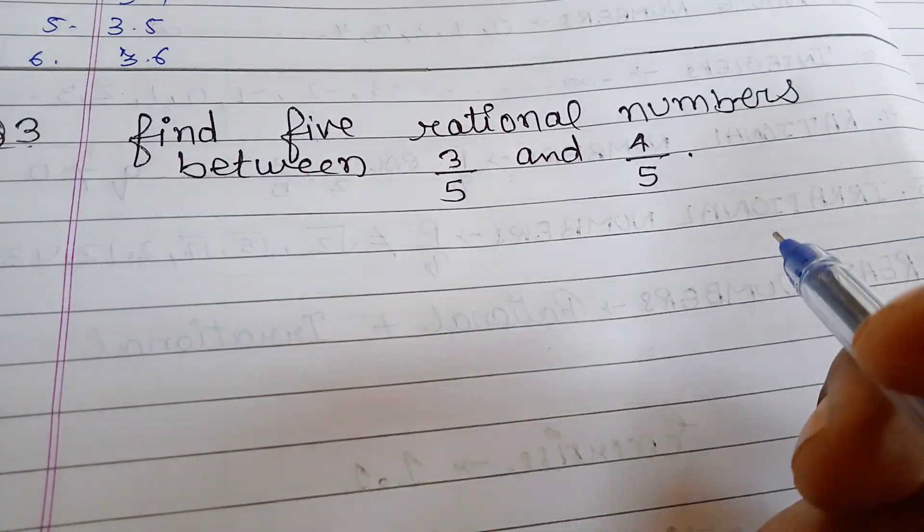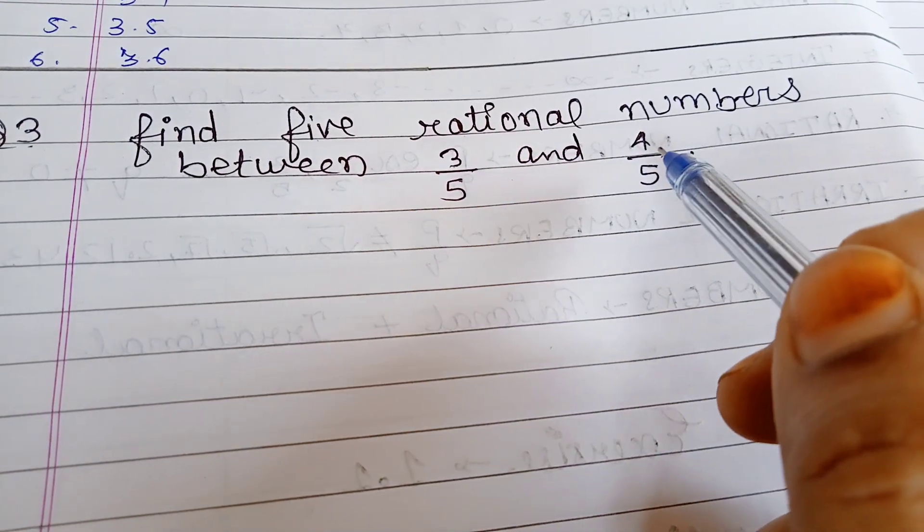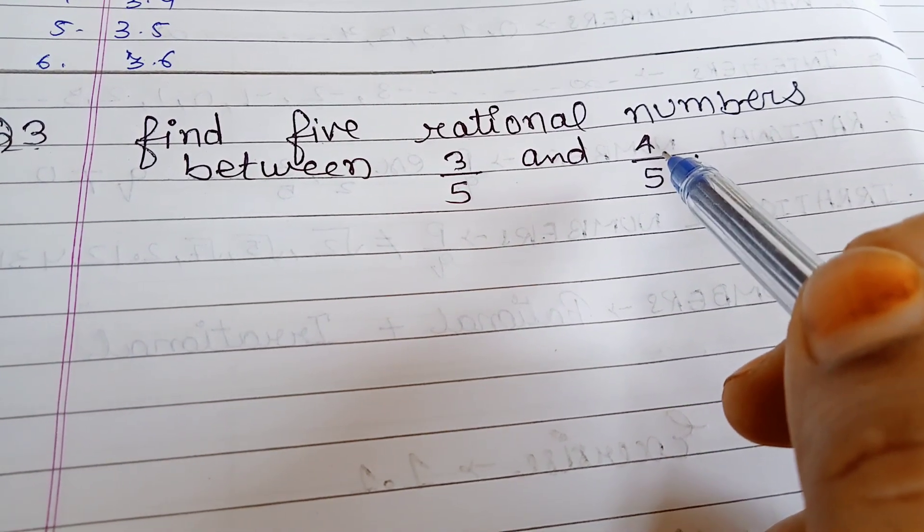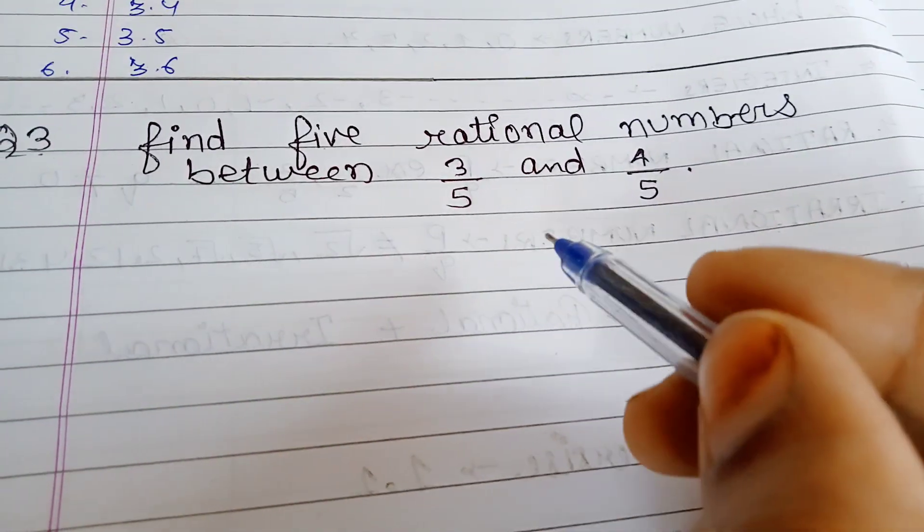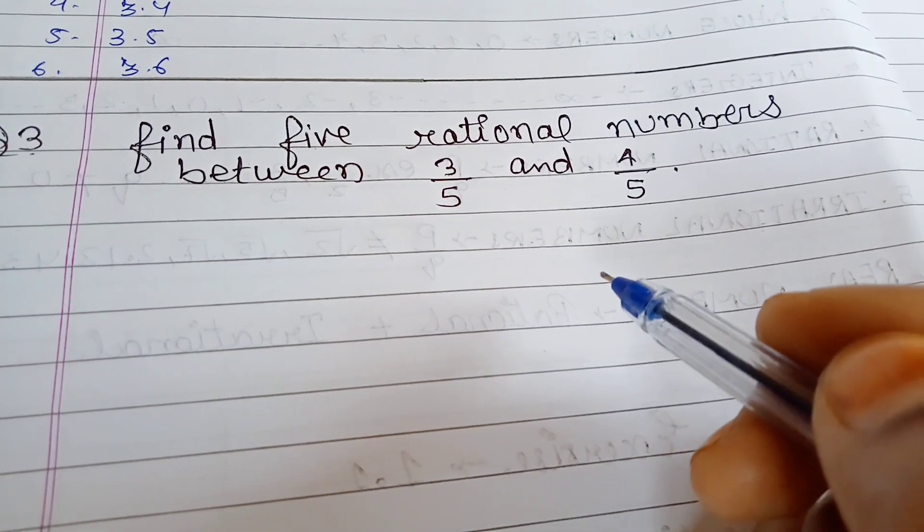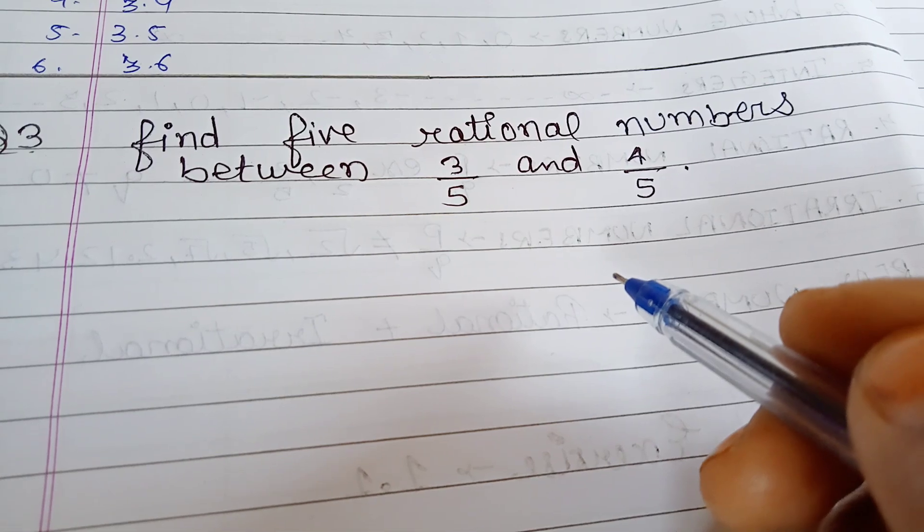As we saw in the last video, we had to find 6 rational numbers between 3 and 4, so we had to represent it on the number line. Now if we have a rational number and we have to find other rational numbers, so first of all...